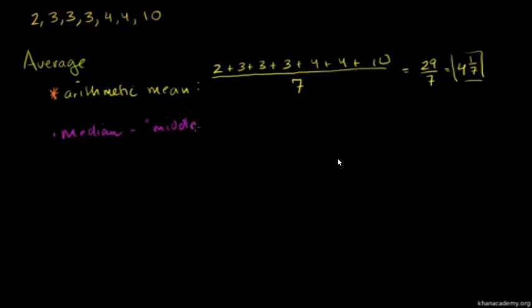The middle number. And if there are two middle numbers, you actually take the arithmetic mean of those two middle numbers. You actually find the number halfway in between those two middle numbers. So the median of this set right here, let me just rewrite them. So I have a 2, 3, 3, 3, 4, 4, 10.